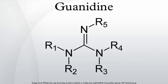Guanidinium salts have a pKa of 13.7, making guanidine a moderately strong base. In neutral water, it exists exclusively as guanidinium, C(NH2)3+. Most guanidine derivatives are in fact such salts.